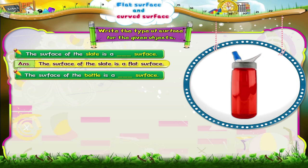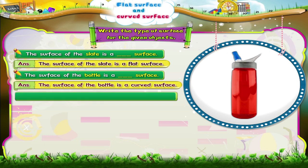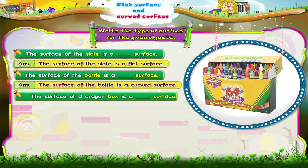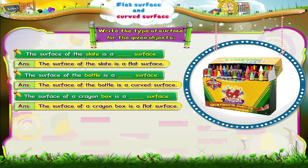The surface of the bottle is a curved surface. The surface of a crayon box is a flat surface.